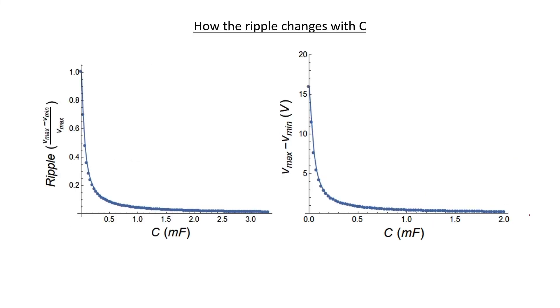I've actually carried out these calculations for a large number of capacitors so that we can see exactly how the ripple changes as a function of the capacitor. On the left here, we have ripple expressed as a ratio. So when there's no capacitor at all, the ripple is 100%.